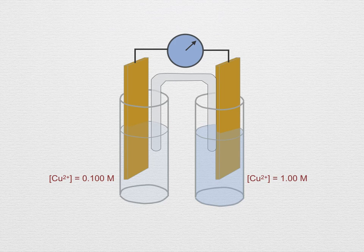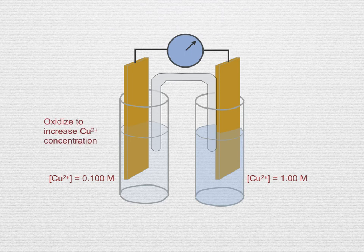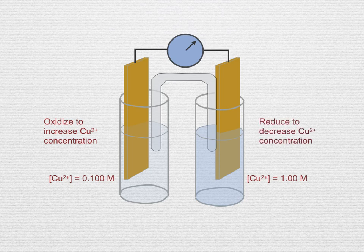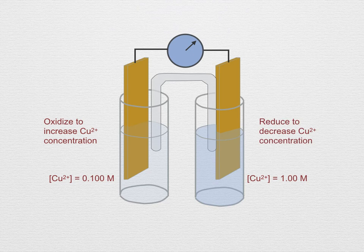Well, the left hand cell could undergo oxidation so that the copper metal loses a couple of electrons and the resulting copper ion diffuses into the solution. At the same time, those two electrons could migrate over to the right hand cell and combine on the surface of the copper electrode with a copper 2 plus ion, resulting in metal copper depositing on the electrode which would remove a copper ion from the solution.